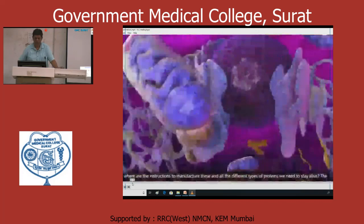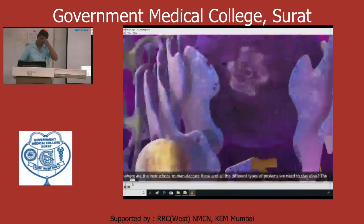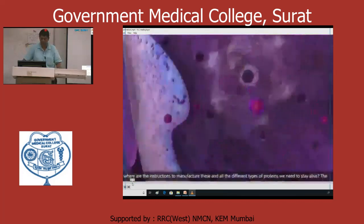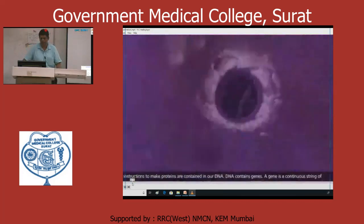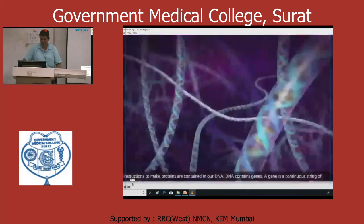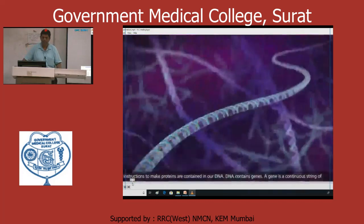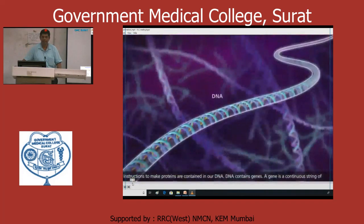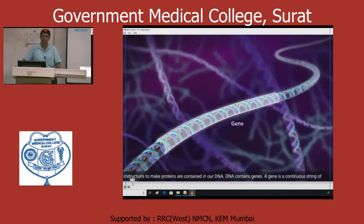This is a cell. This is a nucleus. This is DNA. DNA contains genes. A gene is a continuous string of nucleotides containing a region that codes for an RNA molecule.